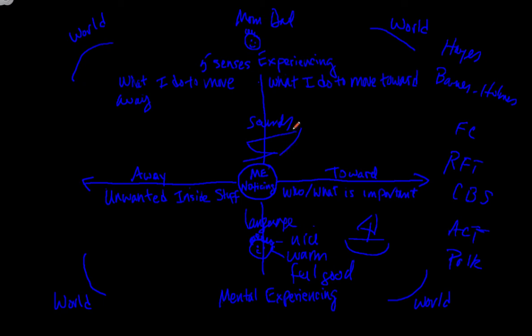So, the matrix diagram that Dr. Polk created contains the core processes of psychological flexibility, and it goes something like this. You can use the diagram to notice. Noticing is a basic process, and it's simply being in the present moment. That's one of the processes is being in the present moment, in the here and now. Noticing. And what we're noticing is, first, who and what is important. Now, who and what are important to each of us are basically what we would call our values.